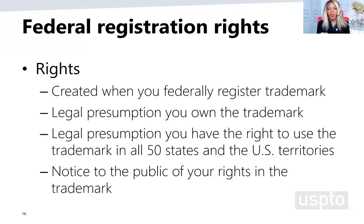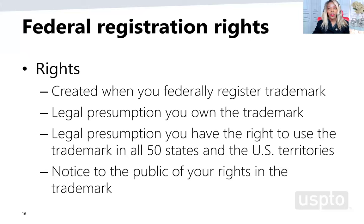Once you navigate through the registration process, your mark is published in the Official Gazette for 30 days, during which anyone in the world can object to your trademark. If no one objects and you meet the other requirements — procedural and substantive — and you're using your mark in commerce, your mark moves to registration. So having a federally registered trademark means you took the time to put people on notice that you want those federal rights.